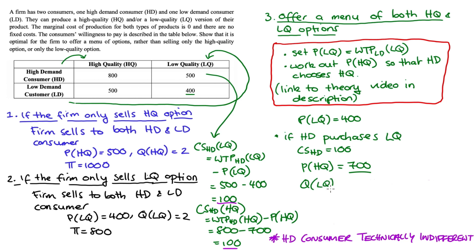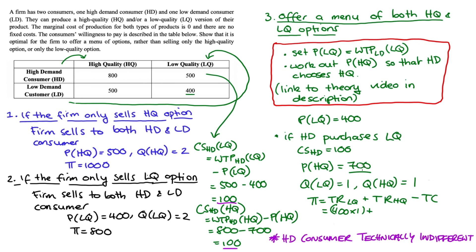In terms of quantities, we're selling one low quality bundle to the low demand consumer and one high quality bundle to the high demand consumer. Profit equals total revenue from the low quality option plus total revenue from the high quality option minus total cost: (400 × 1) + (700 × 1) − 0 = $1,100. We've shown that offering the menu yields higher profit than selling HQ only ($1,000) or LQ only ($800).